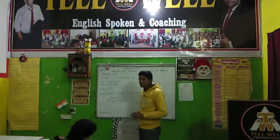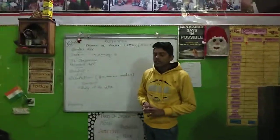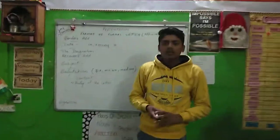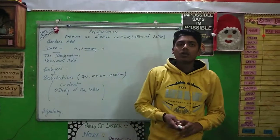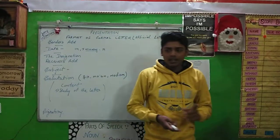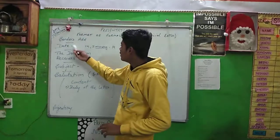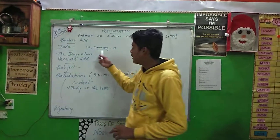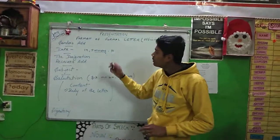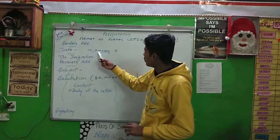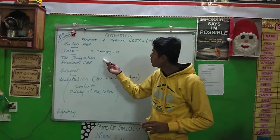First is the sender's address. What is the sender's address? When we are sending a formal letter, we put our sender's address. Then leave one line and put the date — for example, January 2019.